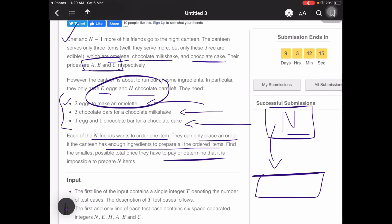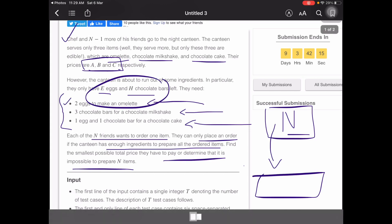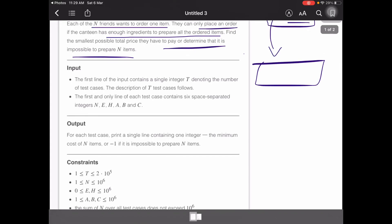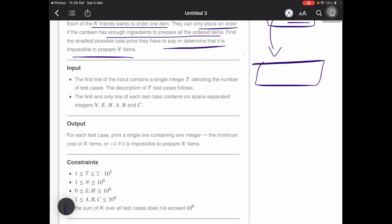We have to find the total minimum price that they'll have to pay. If it is impossible to prepare n items, we must return minus one to the console, otherwise we'll output the minimum cost.